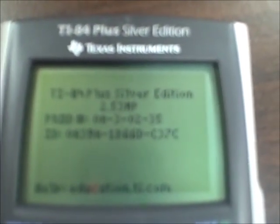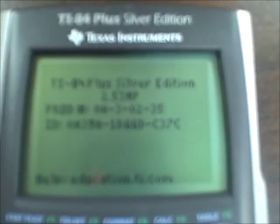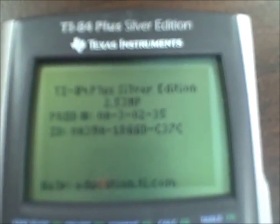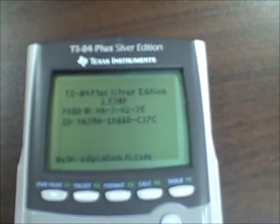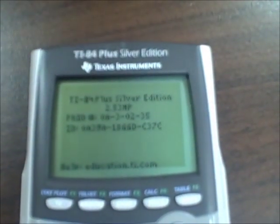And so it tells us our operating system is 2.53 math print, MP is math print. It's our product number and our ID number, and where you go for help if you need help.